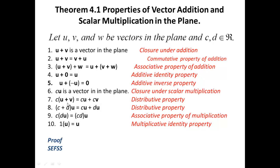We also have left distributivity: c(U + V) equals cU plus cV; and right distributivity: (c + d)U equals cU plus dU. And c into dU equals cdU — the associativity property of multiplication. The multiplicative identity is 1, so 1 times U equals U. I would leave the proofs of these properties as exercises for serious students. Use the definition of addition and scalar multiplication of vectors in the plane, and the proofs will come crumbling like a ripe banana.